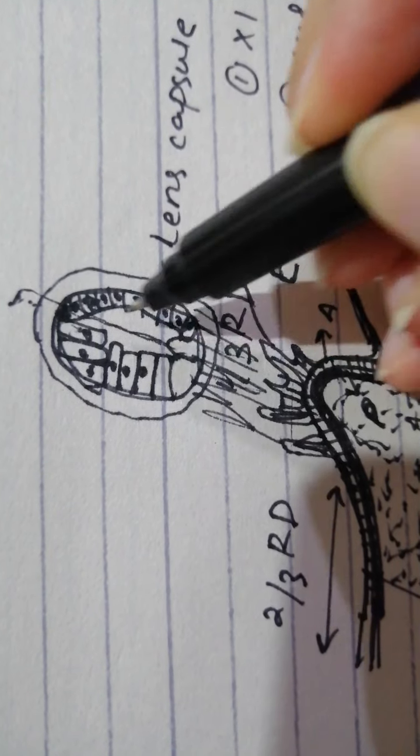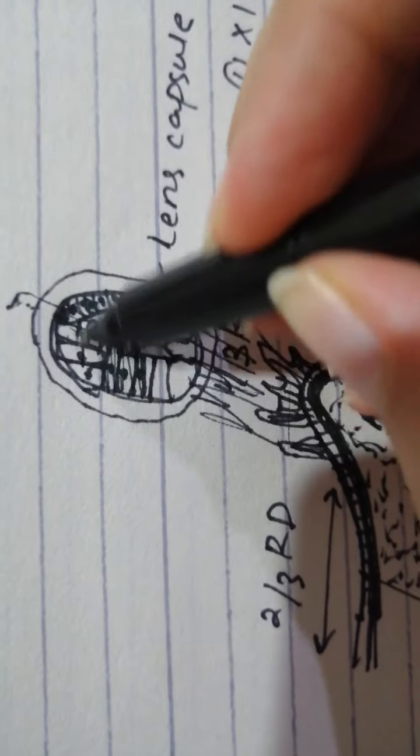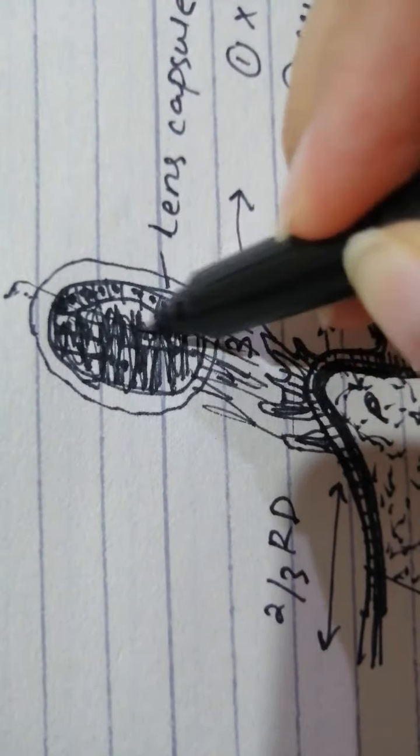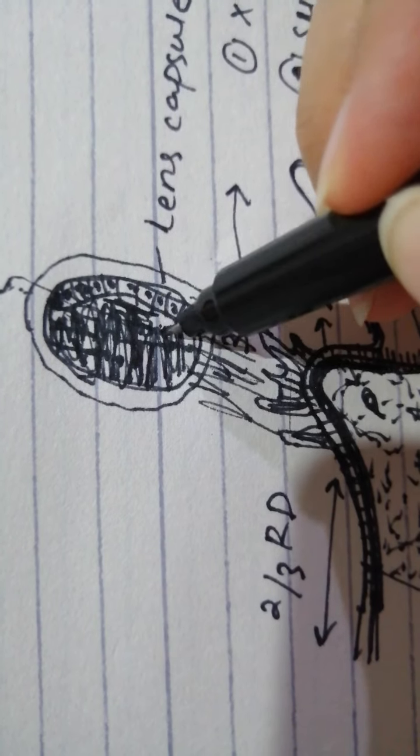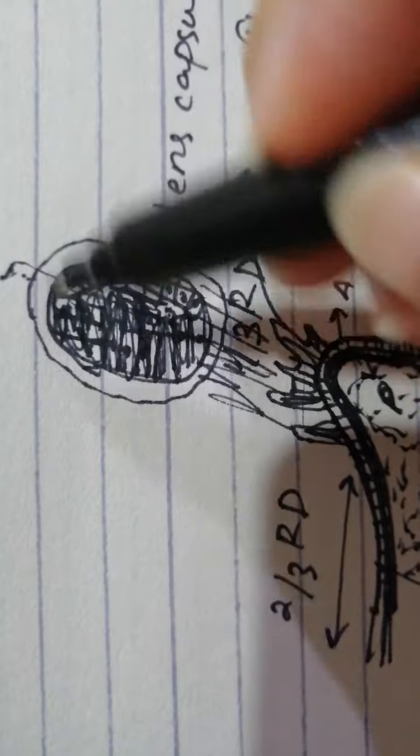And they accumulate this protein which is known as crystallins. And this mitotic division and this differentiation continues throughout the life and that is how the lens fibers continue to be produced.